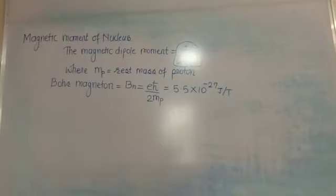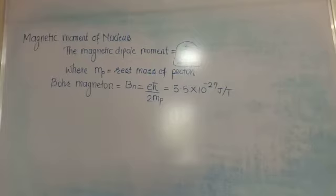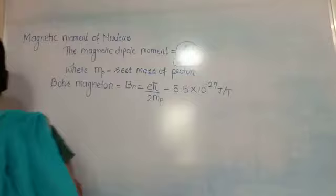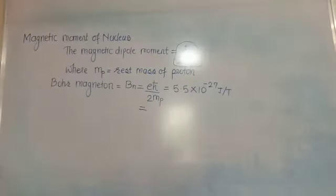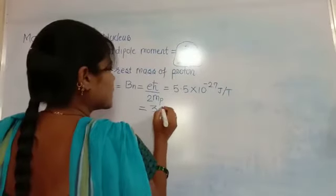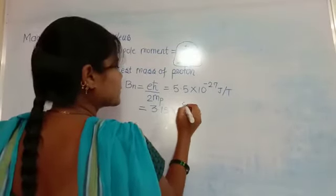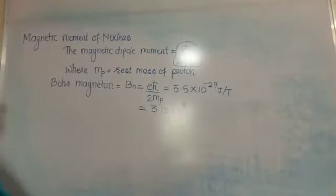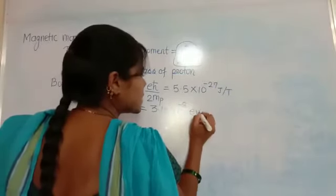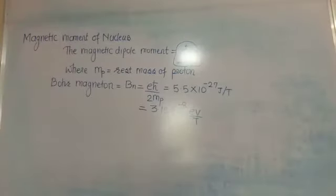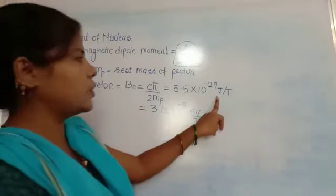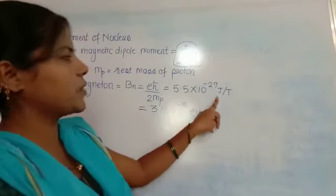After putting in the value of E = 1.6 × 10⁻¹⁹ coulomb, ħ = 6.5 × 10⁻¹⁶ electron volt, and mₚ = 1.673 × 10⁻²⁷ kg, we first get the value 3.15 × 10⁻⁸ electron volt per tesla. After unit conversion we get 5.5 × 10⁻²⁷ joule per tesla.